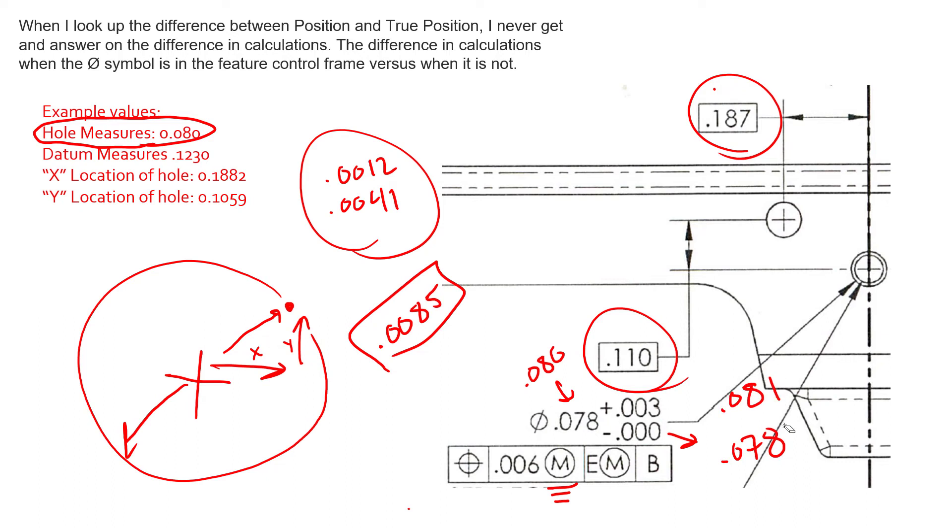And so we've deviated two thousandths away from the MMC, so we get a clearance of two thousandths to add back to position. So we can have technically eight thousandths of position and have a good part based on the size that this feature measured.